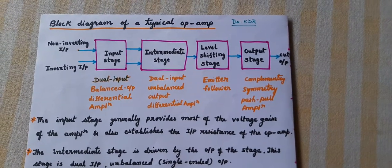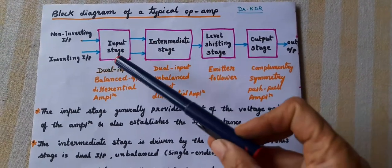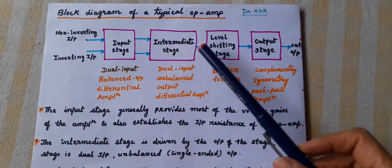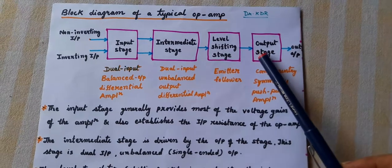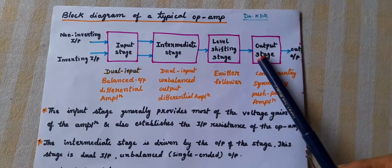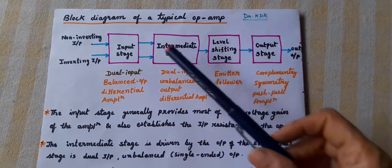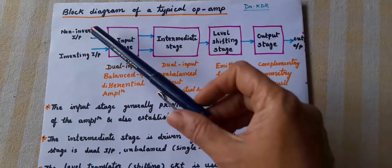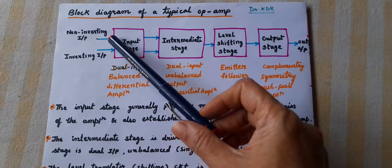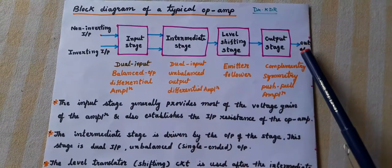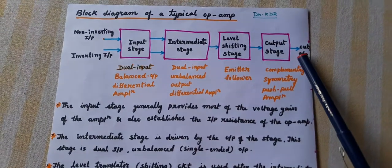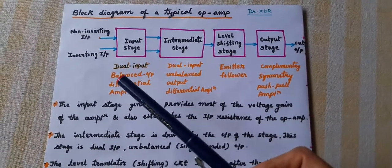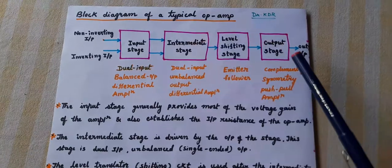The block diagram consists of four blocks: first is input stage, second block is intermediate stage, third one is level shifting stage, and fourth one is output stage. We can clearly see the block diagram of the op-amp is having two inputs — non-inverting input and inverting input — and one output.